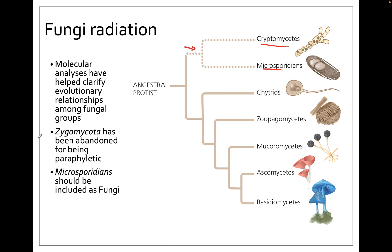Previously, fungi were divided into groups based on their reproductive anatomy, so everybody who used a zygosporangium to reproduce was put into the same phylum called zygomycota. However, that phylum was paraphyletic, and thus wasn't showing the most accurate representation of evolutionary relationships. So that group, zygomycota, was actually taken apart and broken into two different groups: the zopagomycetes and the mucoromycetes. Both of these used to belong to zygomycota.